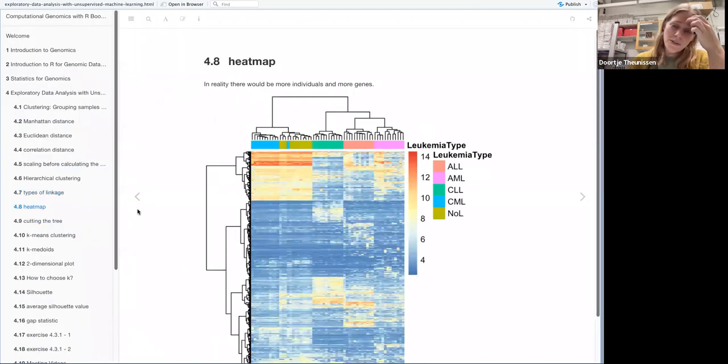Then the book showed that you can also make a heat map because in reality, you would have more genes, not just three. And then they had an example of a leukemia dataset where you have four different types of leukemia and then one group that did not have leukemia. And then this was the result of their hierarchical clustering. So you have the patients at the top. So this is the dendrogram that they ended up with. And then you just have one patient that is mismatched that is being put in the group with no leukemia, but it does have leukemia.